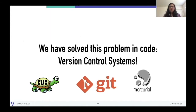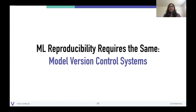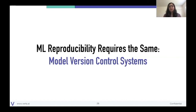Luckily, we've already solved this problem in code. We have made code reproducible via version control systems, and that's how we've been able to get software to the place it is today. The takeaway: if we want to make ML reproducible, we need to do the same thing — a robust and scalable model version control system that snapshots all four ingredients.